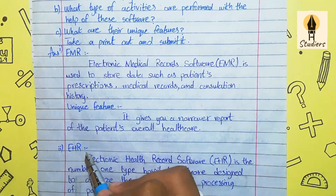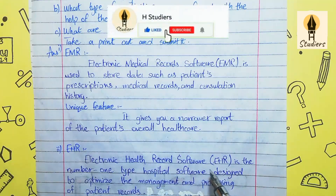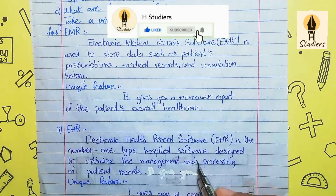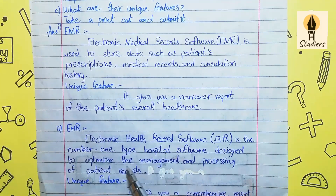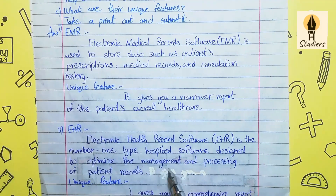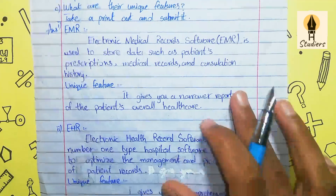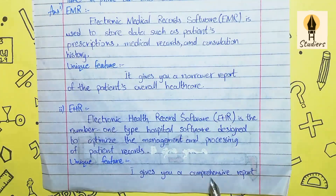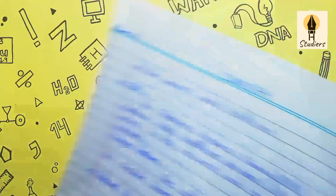Number two: EHR — Electronic Health Records software. EHR is the number one type of hospital software designed to optimize the management and processing of patient records. Its unique feature is that it gives you a comprehensive report of the patient's overall healthcare.